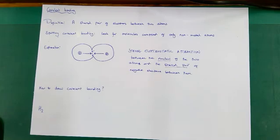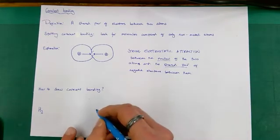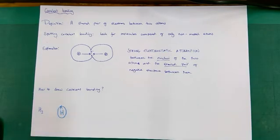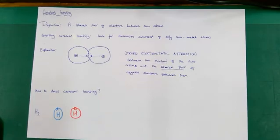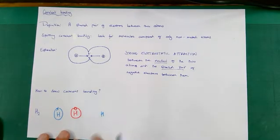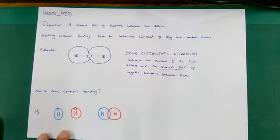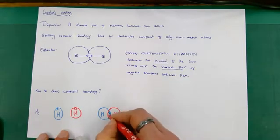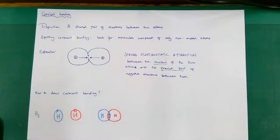To draw dot and cross diagrams for covalent bonding, start with something really simple like hydrogen. Draw the two hydrogen atoms with their full complement of outer shell electrons — one electron each. Represent one as a cross and one as a circle to differentiate between the two atoms. Then draw a Venn diagram style picture with the two hydrogen atoms and their outermost shells overlapping. In the central shared area, place the shared pair of electrons, giving you your hydrogen molecule.